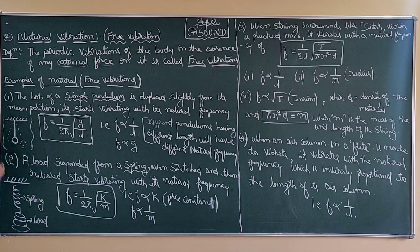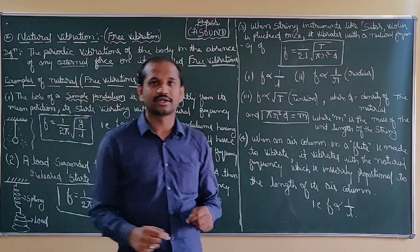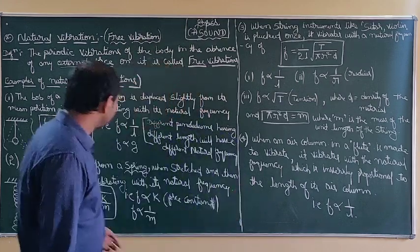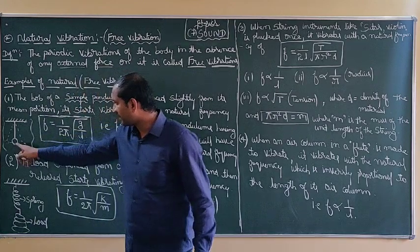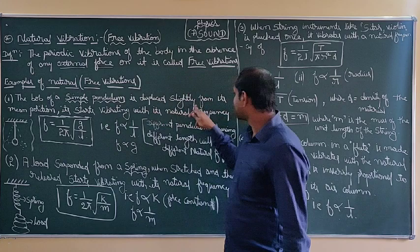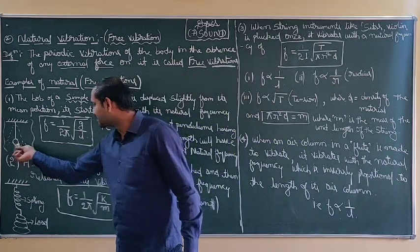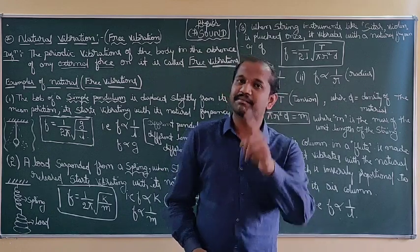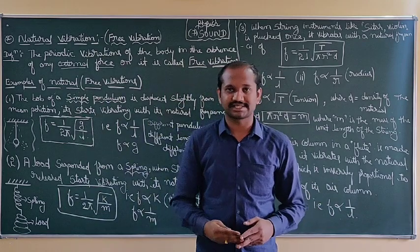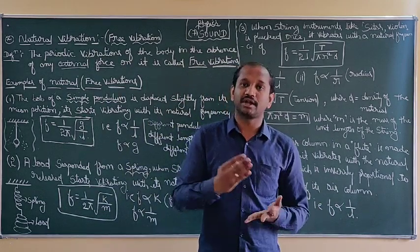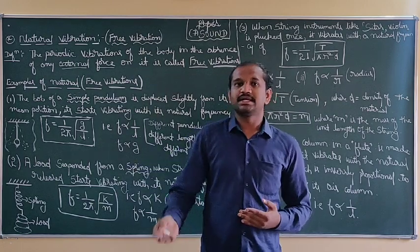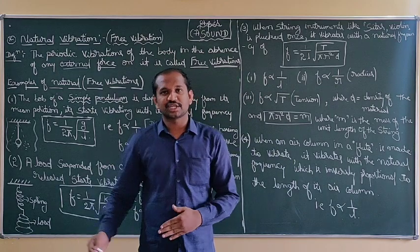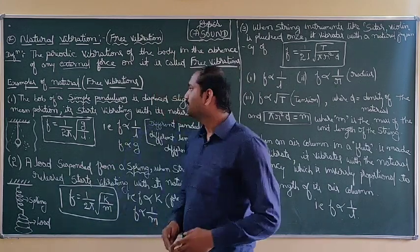Here I have considered a simple pendulum. A string is tied to a needle and a bob is attached to a thread. The bob is displaced slightly from its mean position, and the simple pendulum starts vibrating with its own natural frequency. Remember: every object in the universe has its own natural frequency. In the case of natural, damped, or free vibrations, amplitude may be changing but frequency remains the same. This is a very important question in exams.